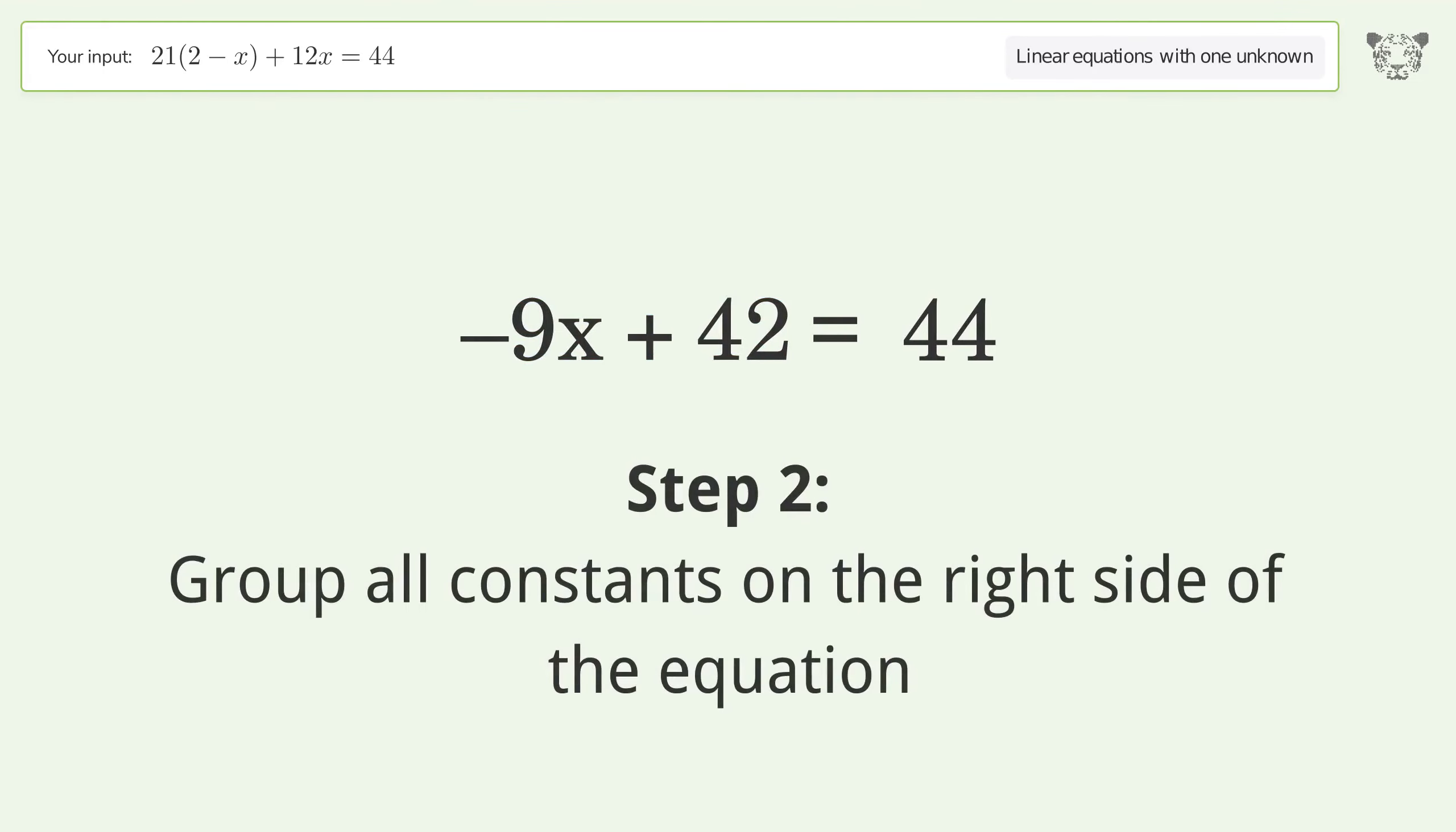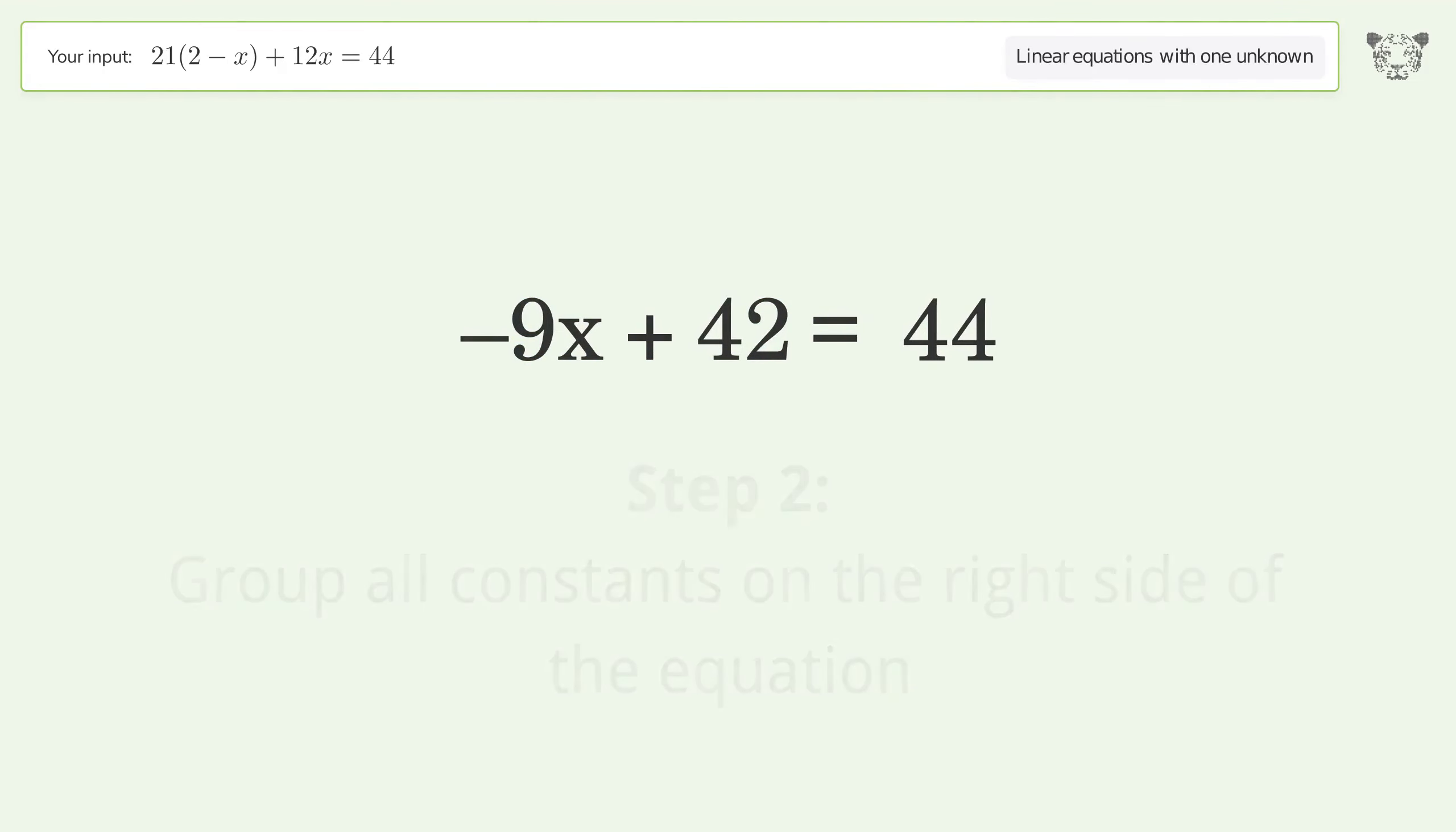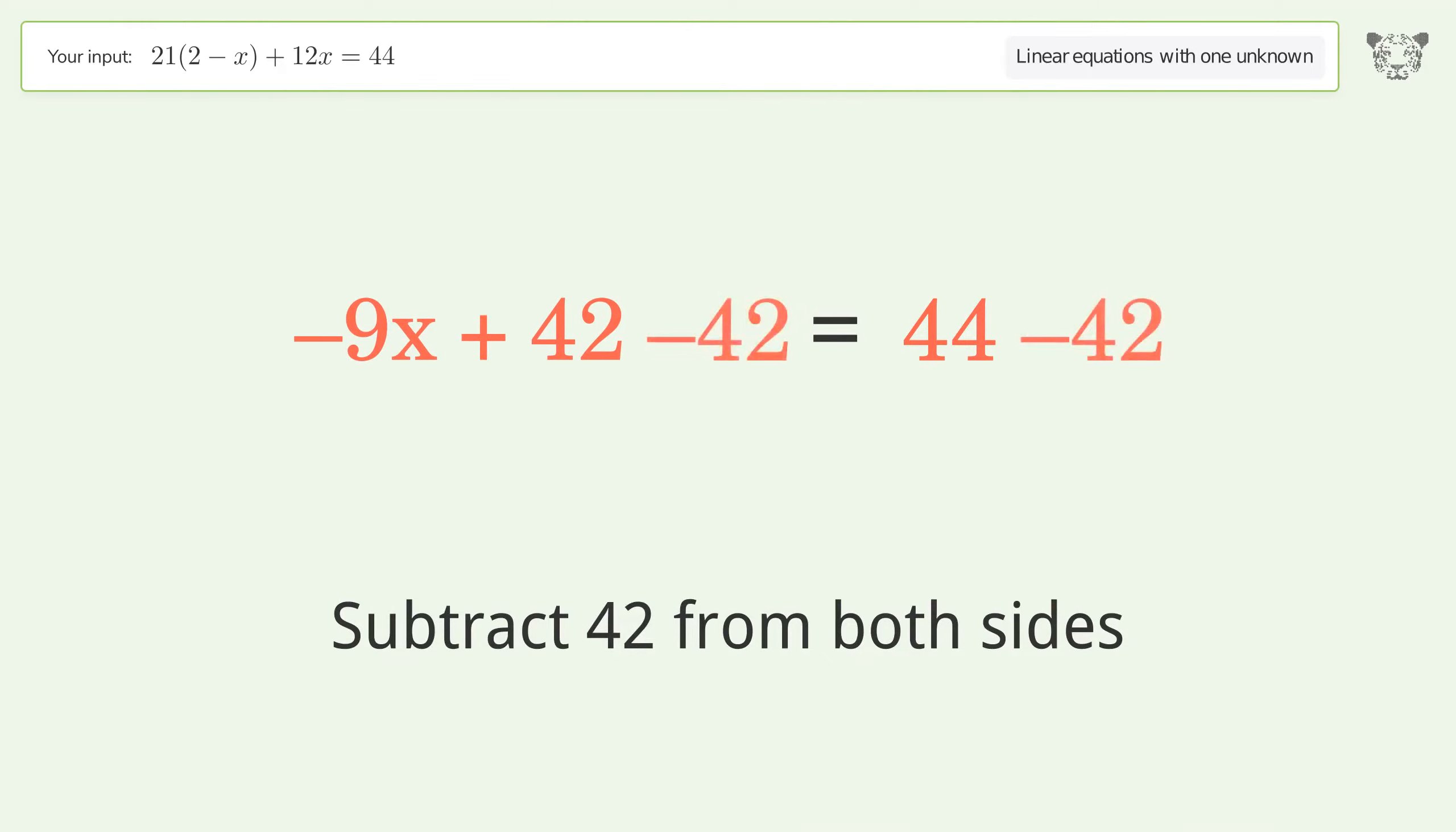Group all constants on the right side of the equation. Subtract 42 from both sides. Simplify the arithmetic.